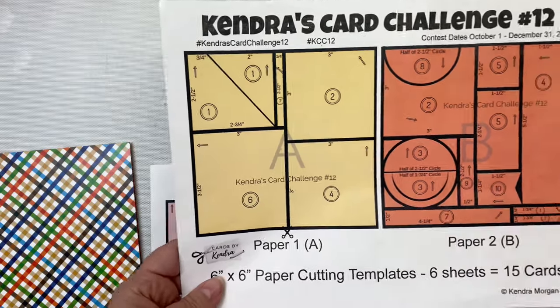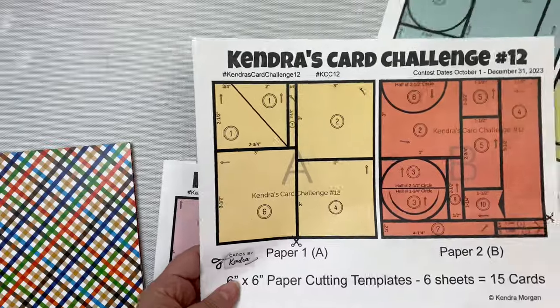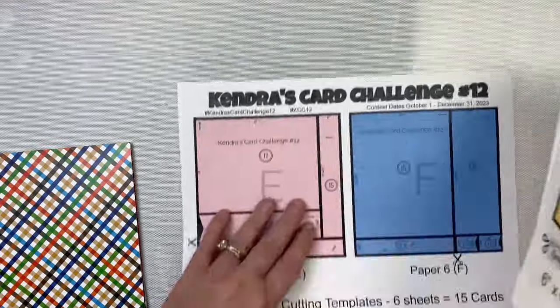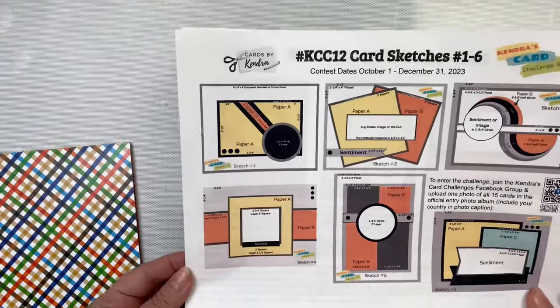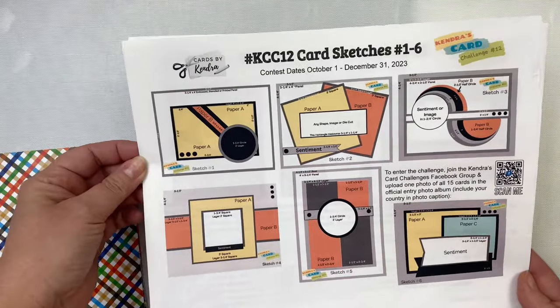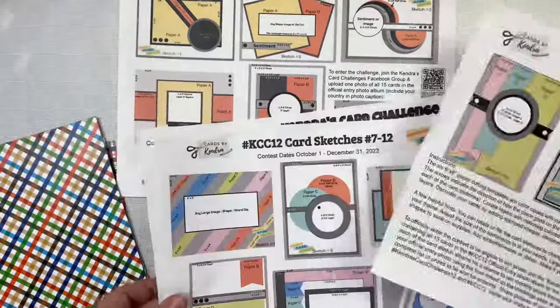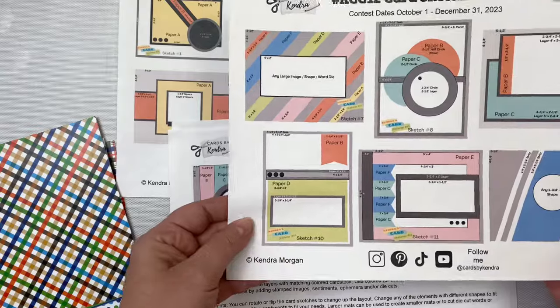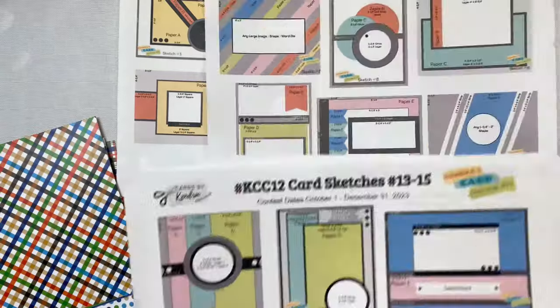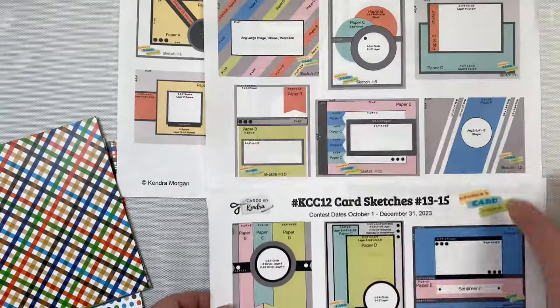I want to quickly point out a few things on the cutting guides that are really helpful. There's scissors shown to indicate which line should be cut first, and there's arrows on each of the pieces to show which way the piece will be facing. That's helpful to know if you have directional patterns that need to face a certain way. There's also numbers for each of the pieces which indicate which sketch number that it goes with.